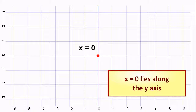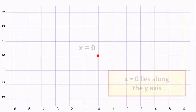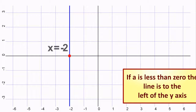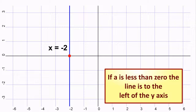X equals 0 lies along the Y axis. If A is less than 0, the line is to the left of the Y axis.